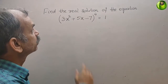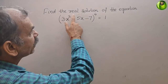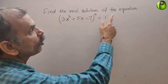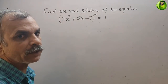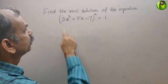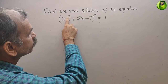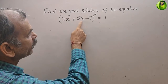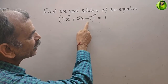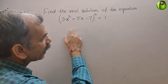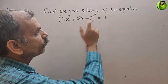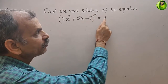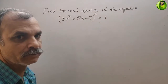Your question is: find the real solution of the equation. See what they have given — (3x² + 5x - 7) to the power of 4, that is equal to 1.